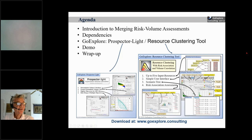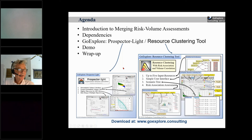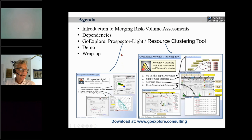I'll start with an introduction to the process of merging risk and volume assessments. Dependencies become very important, so I'll have a few words on those as well. After that, I'll go to the two software products: Prospector Lite on the left, which we've seen in a previous webinar for prospect volume estimation, and now we're using it to merge risk-volume assessments. The Resource Clustering tool is a more elaborate probabilistic tool. I'll demo both, then wrap up. It should take about 30 to 40 minutes.